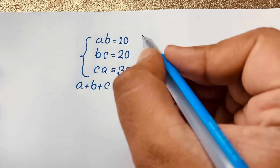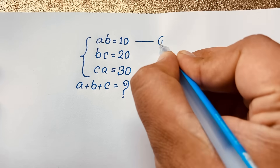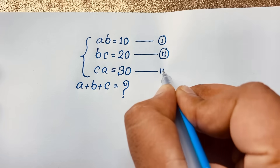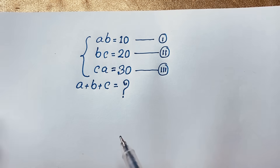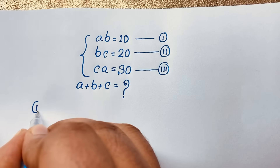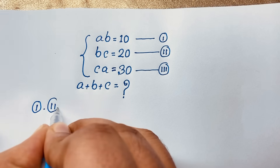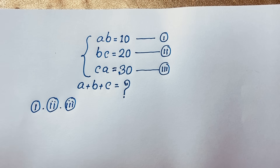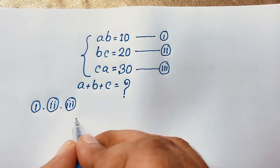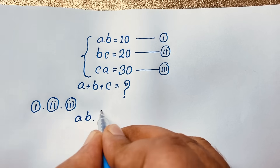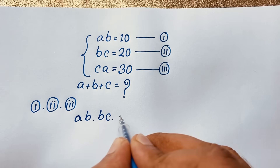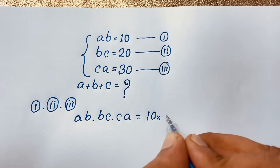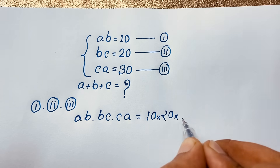So first of all, this is our first equation, this is our second equation, and this is our third equation. I multiply the first equation, second equation, and third equation. You can see this expression: AB times BC times CA is equal to 10 times 20 times 30.